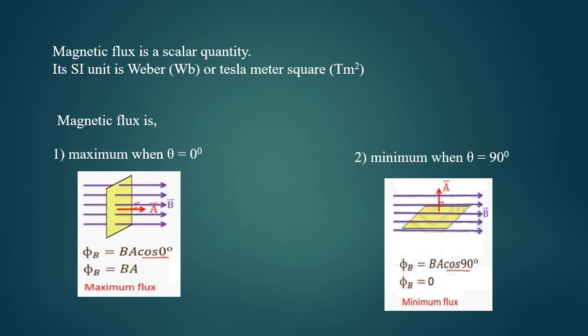In this case, we see that the number of field lines crossing the given area is less, hence the flux is minimum.